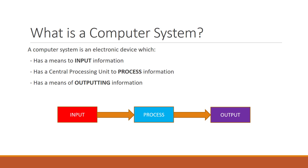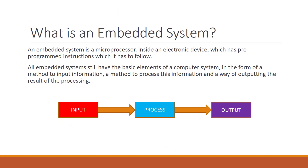There are two types of computer system: embedded systems and personal computers. Embedded systems are electronic devices that contain a microprocessor within them, and this processor contains pre-programmed instructions that it must follow. These instructions usually cannot be changed. All embedded systems will have some form of input, a method of processing what has been input, and a way of outputting the results of this processing.